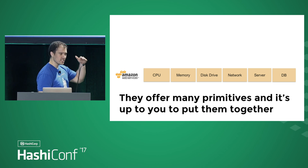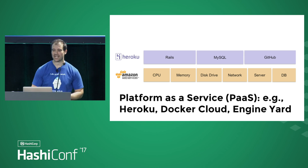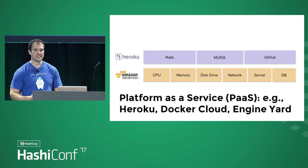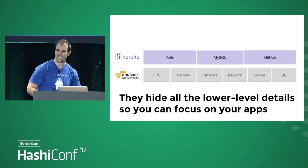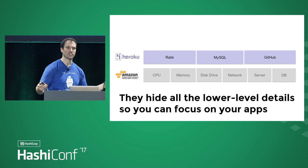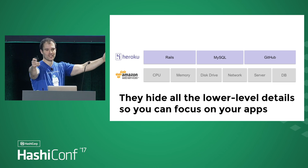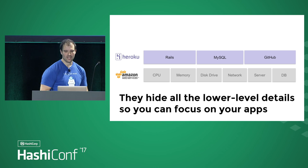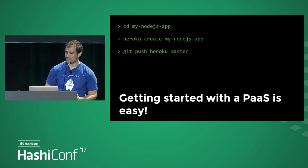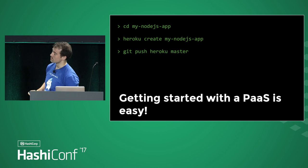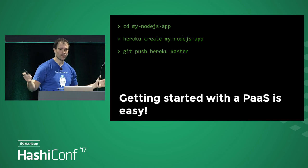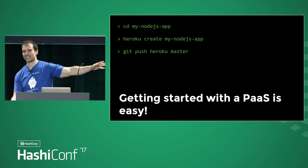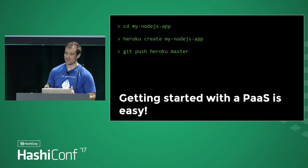The second option is platform as a service — that's things like Heroku, Docker Cloud, Engine Yard. These tend to hide all of those low-level details from you and give you a nice high-level API. Here's how you deploy an app, here's how you deploy a database, instead of routing together VPCs and subnets. The advantage of platform as a service is it makes it very easy to get started. You can basically create your app, run Heroku create, do a git push, and you have it live.